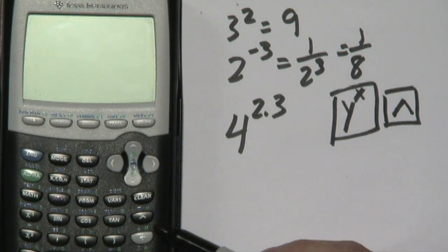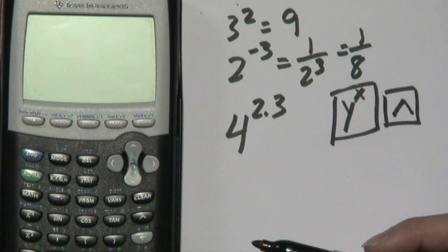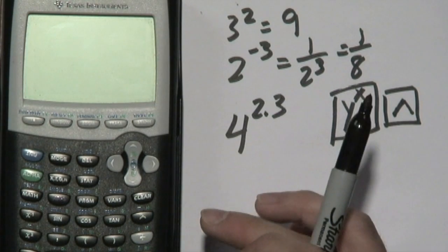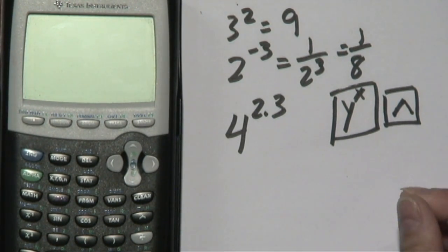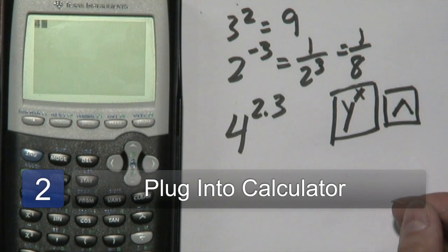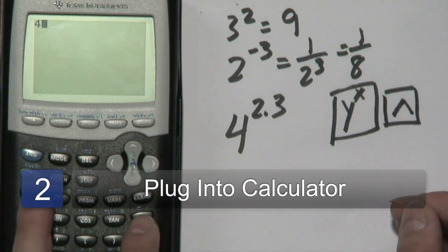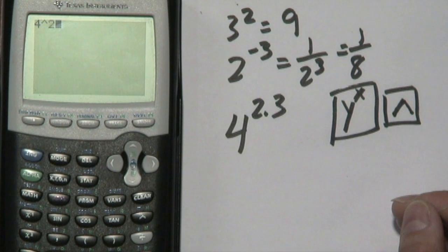Now, in the example that we'll be using, we have the caret button as the exponent key. So we're going to find out what four to the 2.3 is going to be right now. So you do four, and then you use the caret button, and then just enter 2.3, and then you press either enter or equals, depending on the calculator that you have.